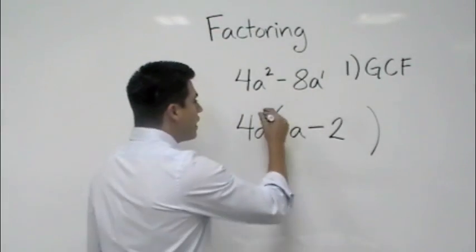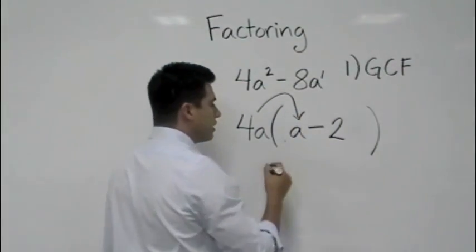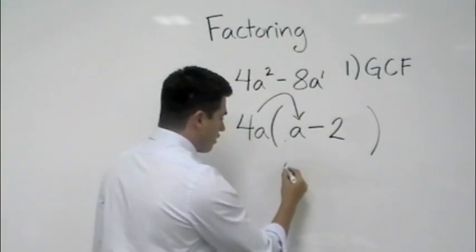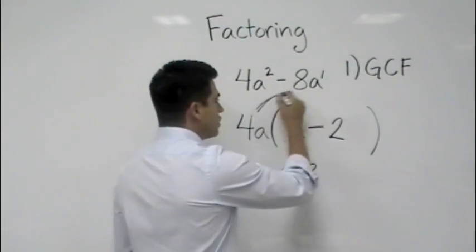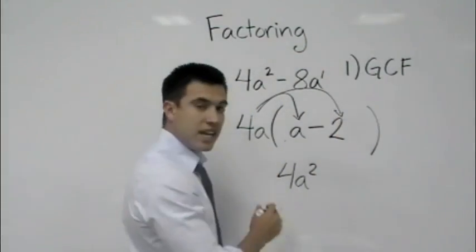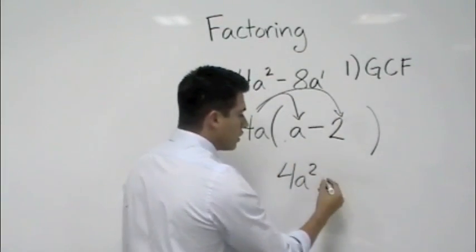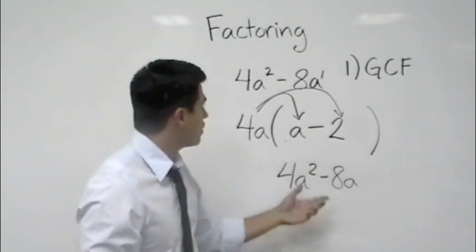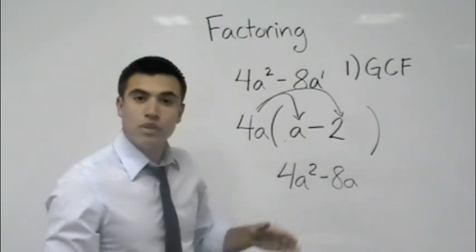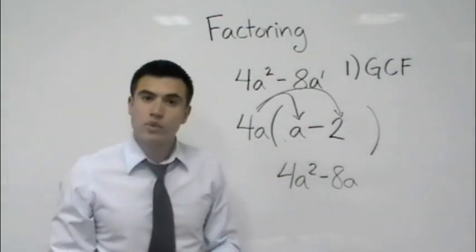How do we check it? Well, if you do your distributive property, 4a times a will give me 4a², and then we distribute again, 4a times negative 2 will give me negative 8a. Once you multiply it back out and you get your original binomial, you can realize that you factored it correctly.